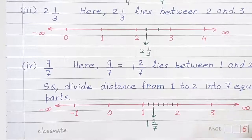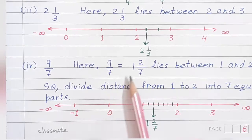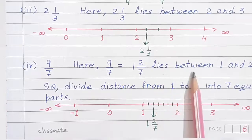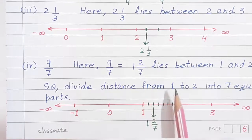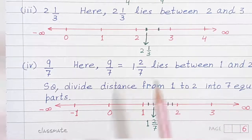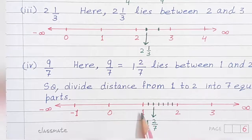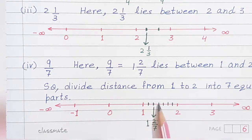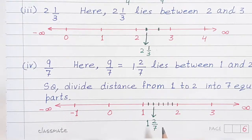The last example is 9 upon 7. Here, 9 upon 7 is equal to 1 and 2 upon 7, which lies between 1 and 2. So we divide the distance from 1 to 2 into 7 equal parts, because the denominator is 7. Between 1 and 2: 1, 2, 3, 4, 5, 6 and 7. The first point is 1 by 7 and the second point is 2 by 7. So the answer is the second point. Make sure while drawing the number line, you take appropriate and equal distances — 1 cm, 2 cm, or whatever suits you.